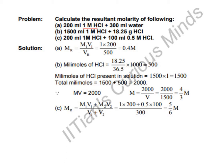What will be the new concentration? First we'll find the number of moles. Molarity is the number of moles per liter, so number of moles will be molarity × volume = 1 molar × 200 ml = 200 millimoles.